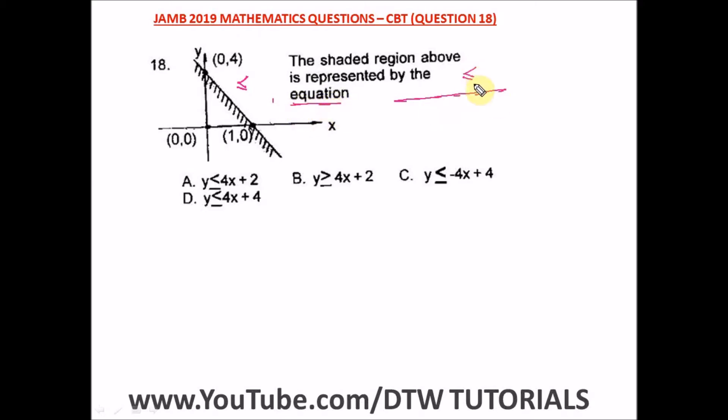That's what the question asks us. Let's get the equation, then at the end we'll put in this sign. To get the equation of the line, the formula is y minus y₁ over x minus x₁ equals y₂ minus y₁ over x₂ minus x₁.